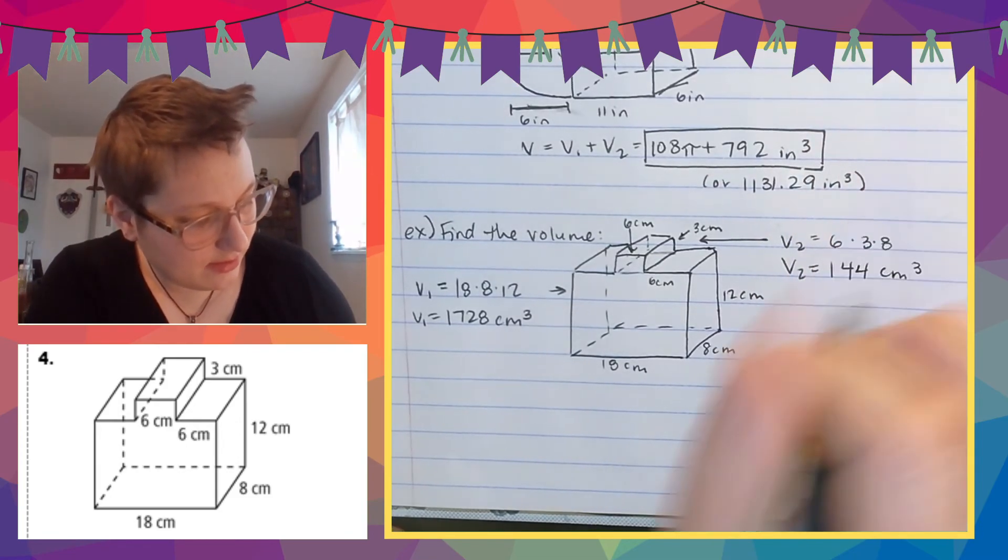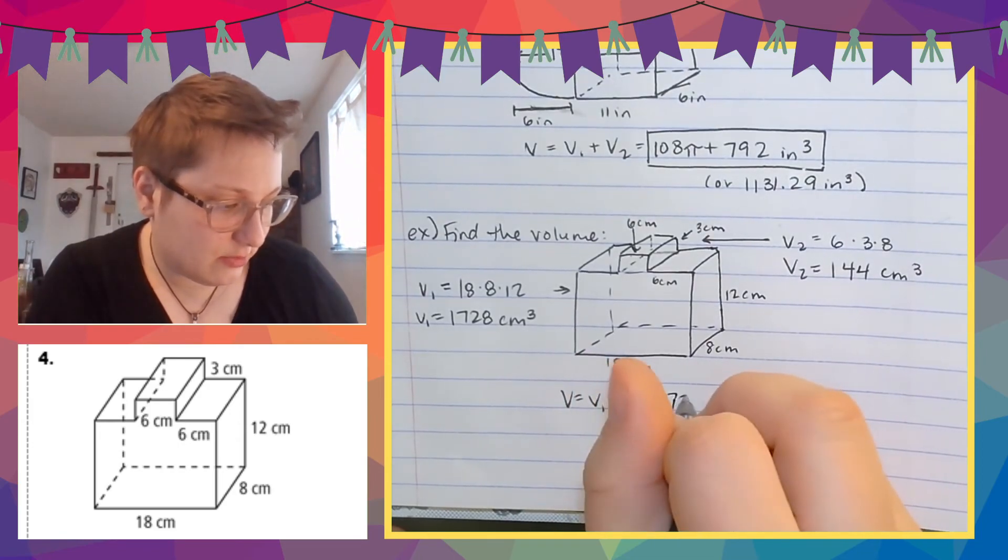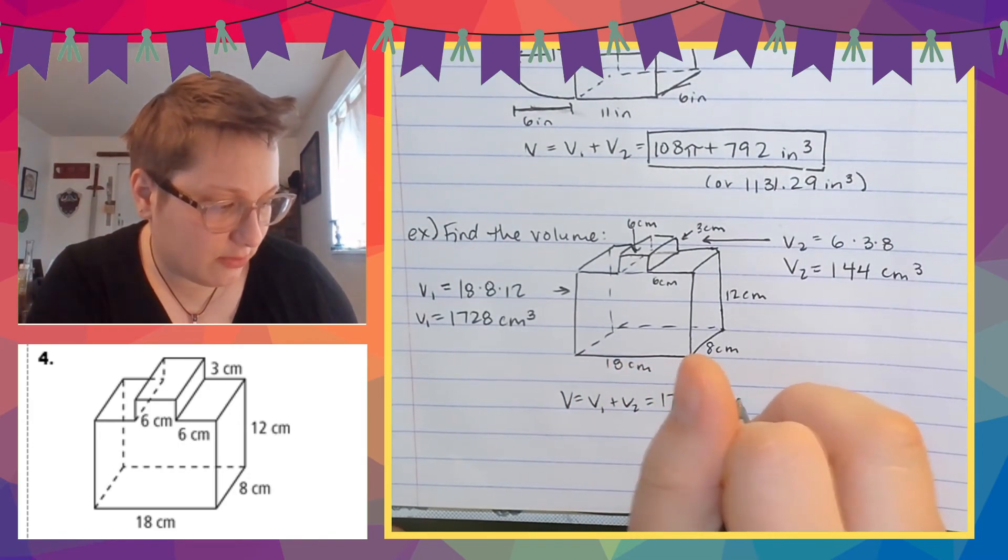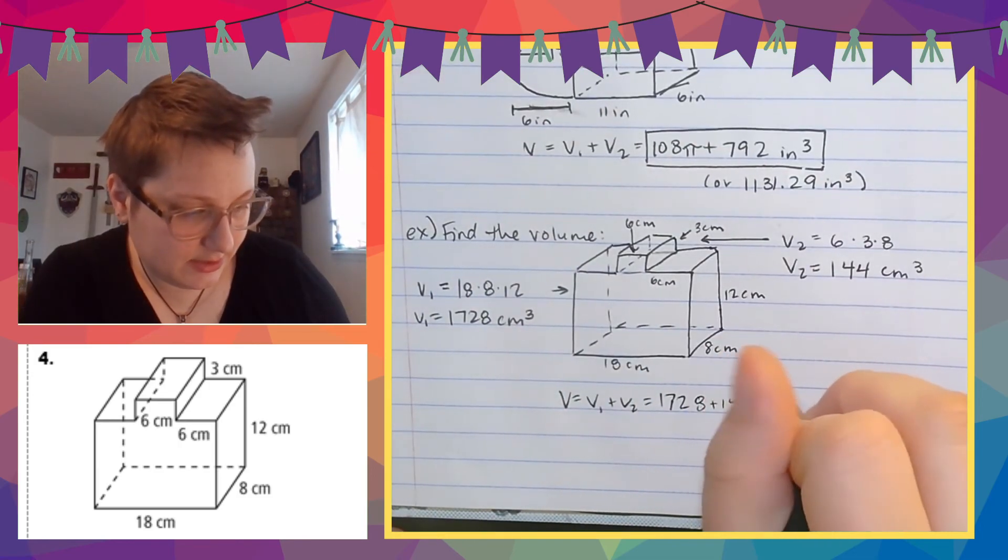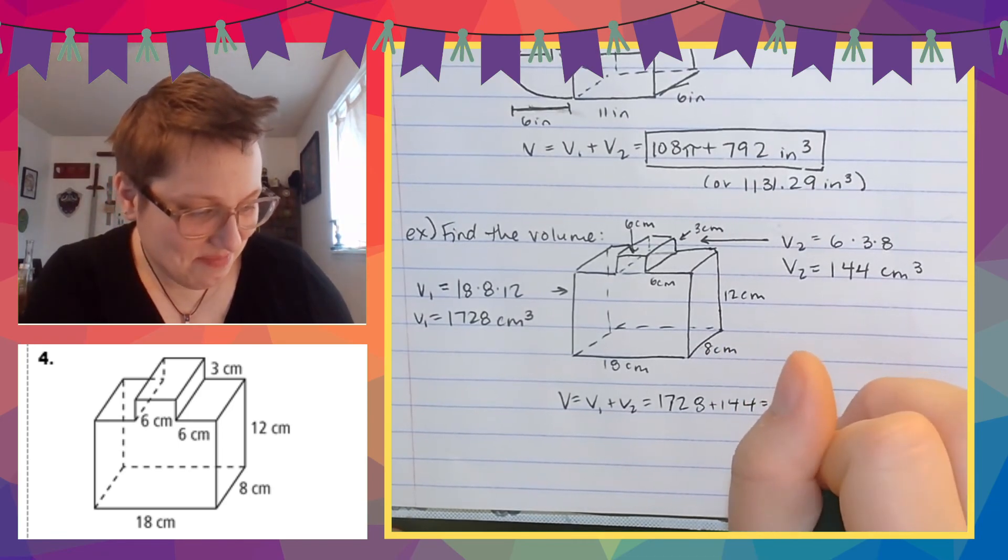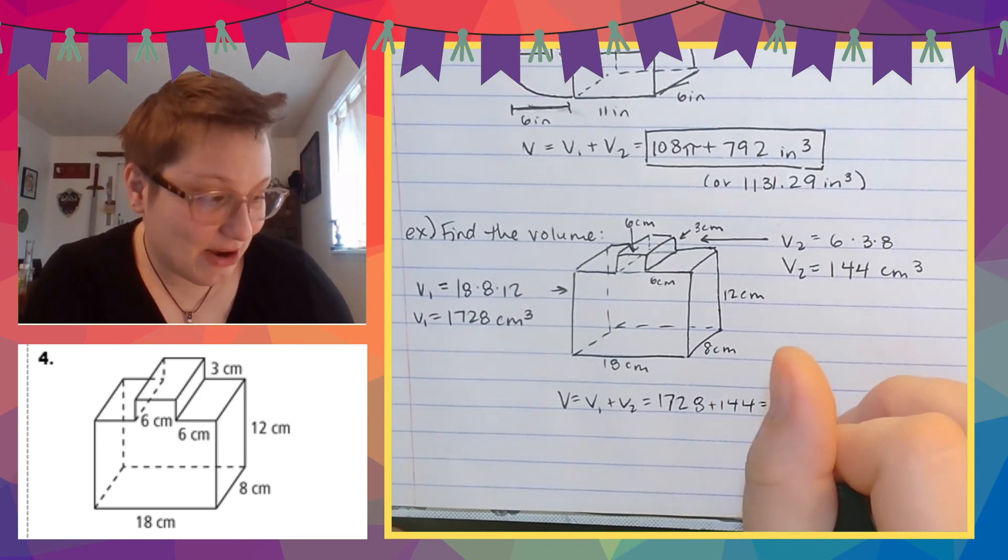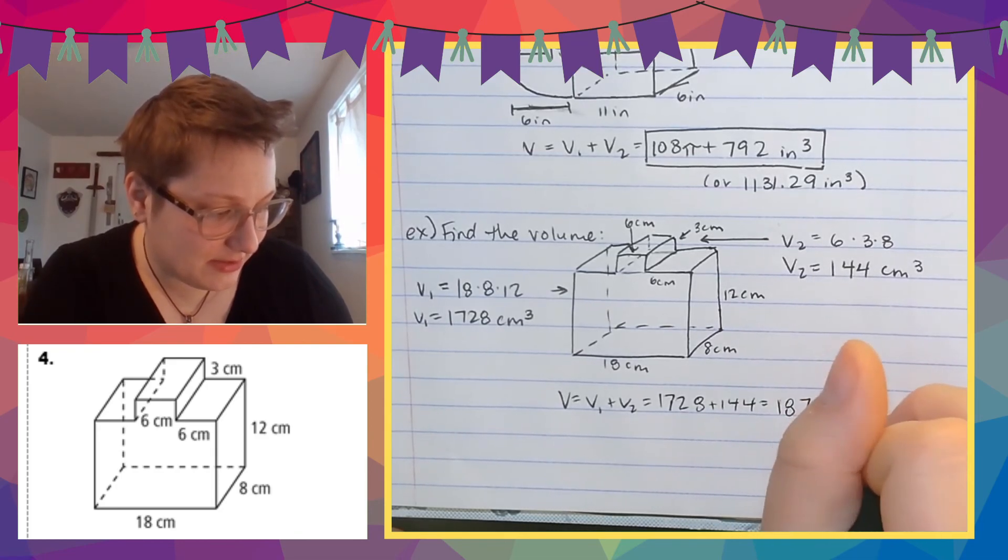Cubic centimeters. So then the whole volume is again, volume one plus volume two, which is 1728 plus 144, which is 1872. I almost think Columbus sailed the ocean blue, but I don't think this is, I know this is not that I'm bad at history, but cubic centimeters done.